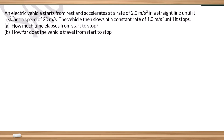First question: An electric vehicle starts from rest and accelerates at a rate of 2 m/s² in a straight line until it reaches a speed of 20 m/s. The vehicle then slows at a constant rate of 1 m/s² until it stops. A) How much time elapses from start to stop? B) How far does the vehicle travel from start to stop? The key words here are: straight line, starts from rest, accelerates at 2 m/s² (constant), slows at constant rate of 1 m/s².